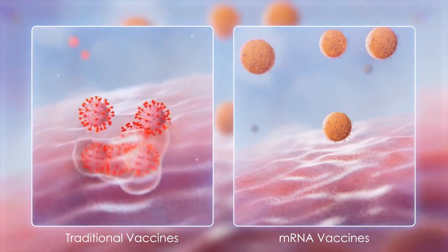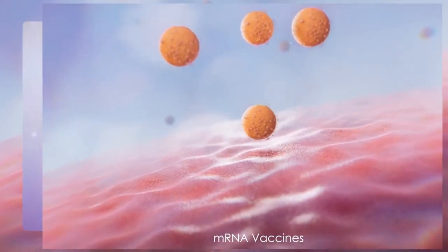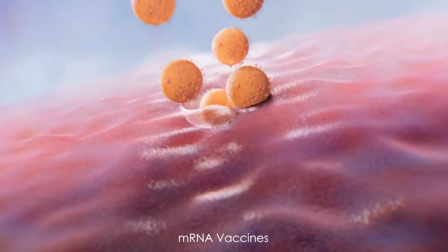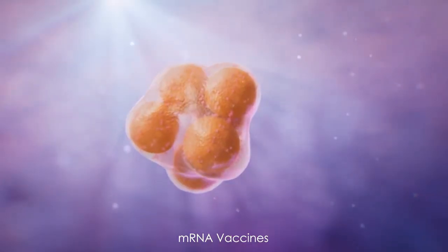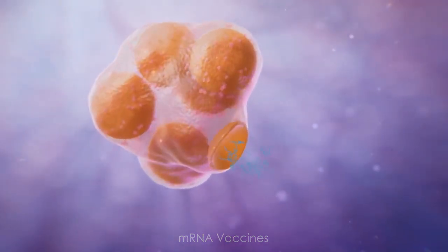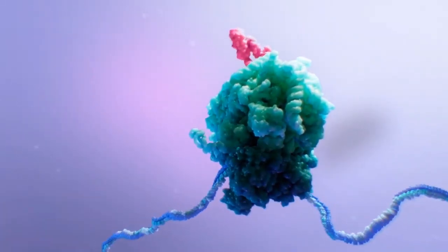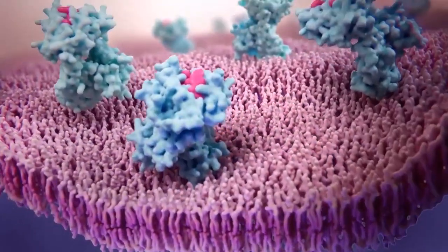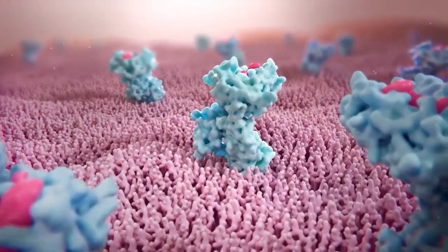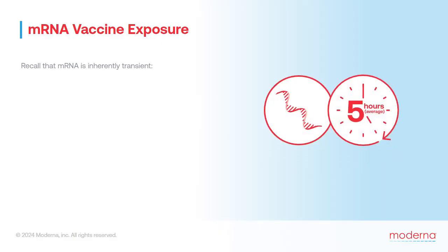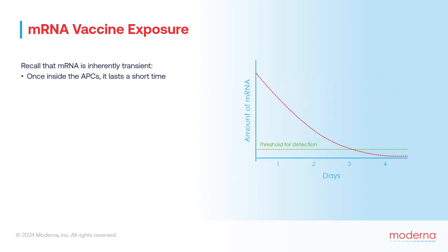mRNA vaccines work in a similar but different way. With traditional vaccines, APCs ingest the entire pathogen. With mRNA vaccines, the pathogen is replaced by LNPs. The APCs ingest the LNPs carrying mRNA instructions for how to manufacture one or more pathogen proteins, then use their own ribosomes to make those proteins for surface display. Because mRNA is inherently transient, once it's inside the antigen-presenting cells it lasts just a short time. In animal studies, mRNAs formulated with the same LNP used for Moderna's SARS-CoV-2 vaccine were undetectable after just three days.